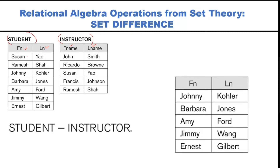You pick the first tuple from student and check if it exists in the second table (instructor). Listen carefully — you pick the first row and search in the second table. If it is found in any row of the second table, you cannot include it in the result.